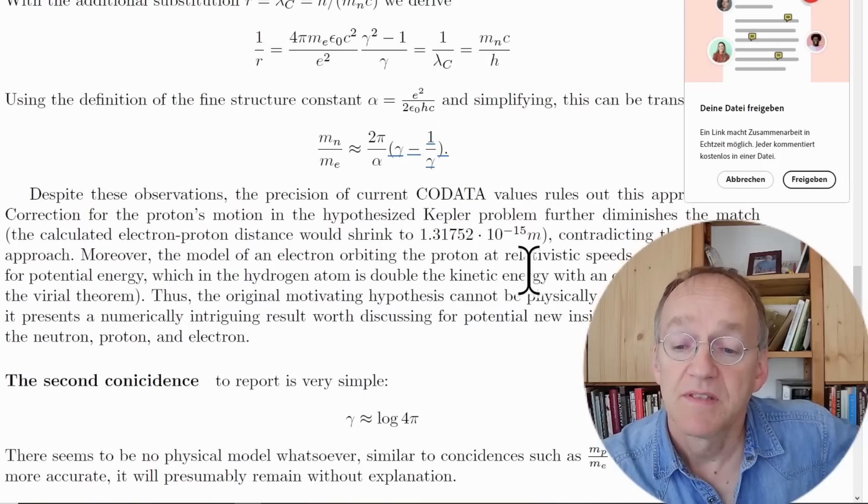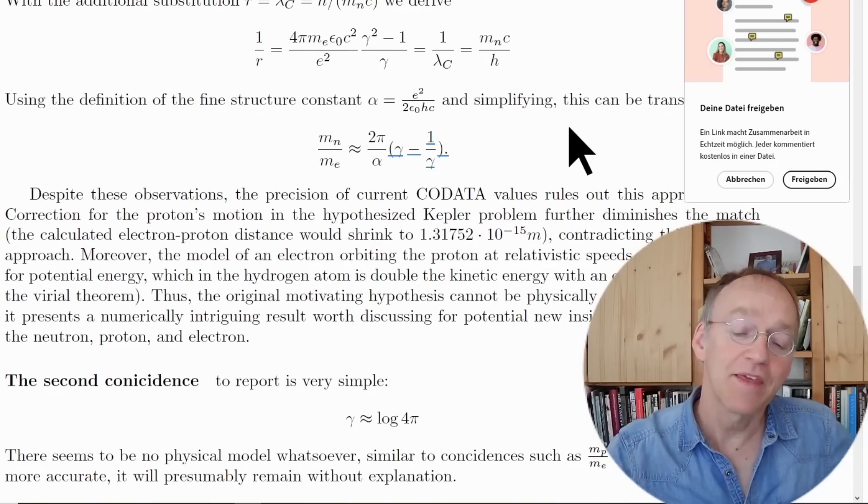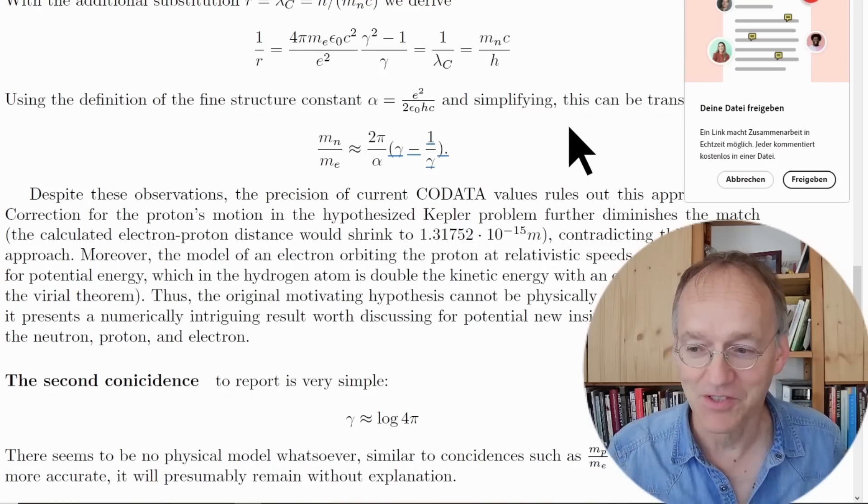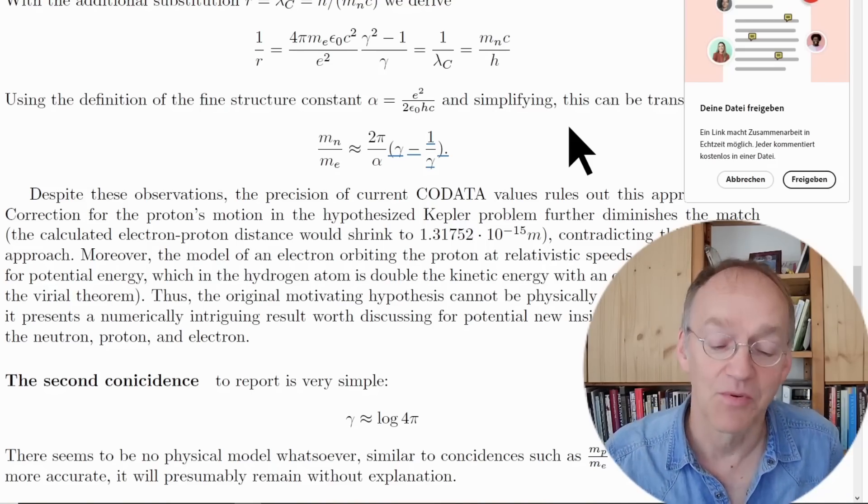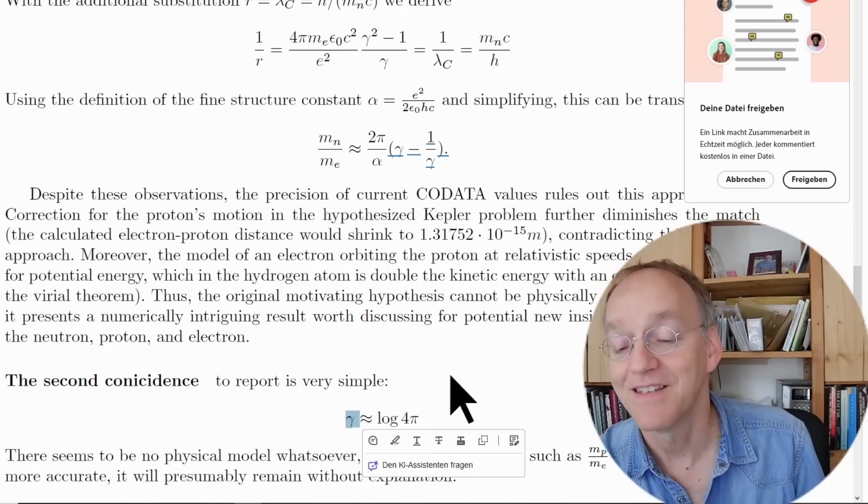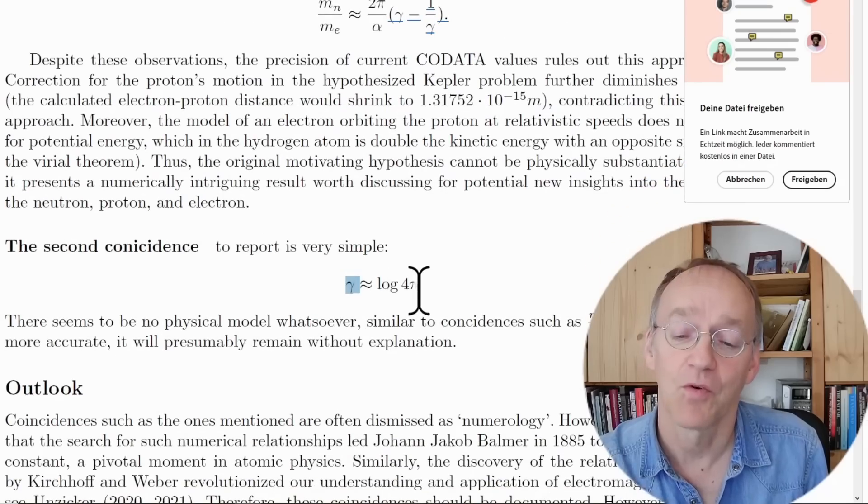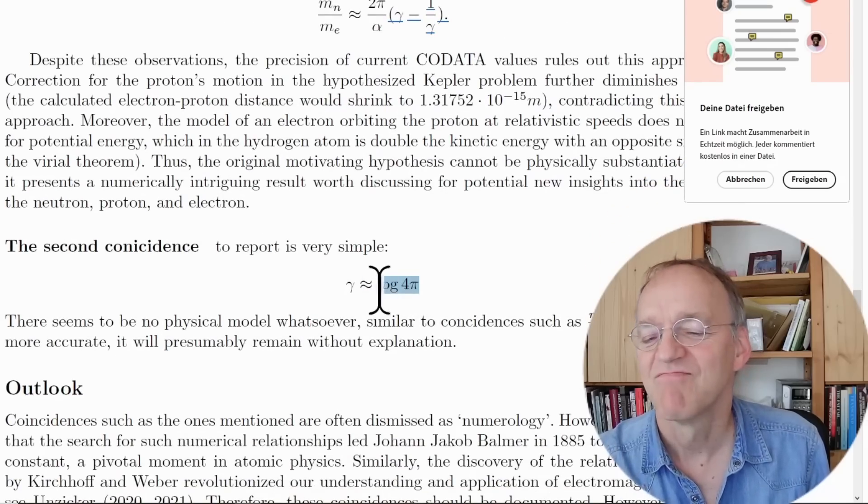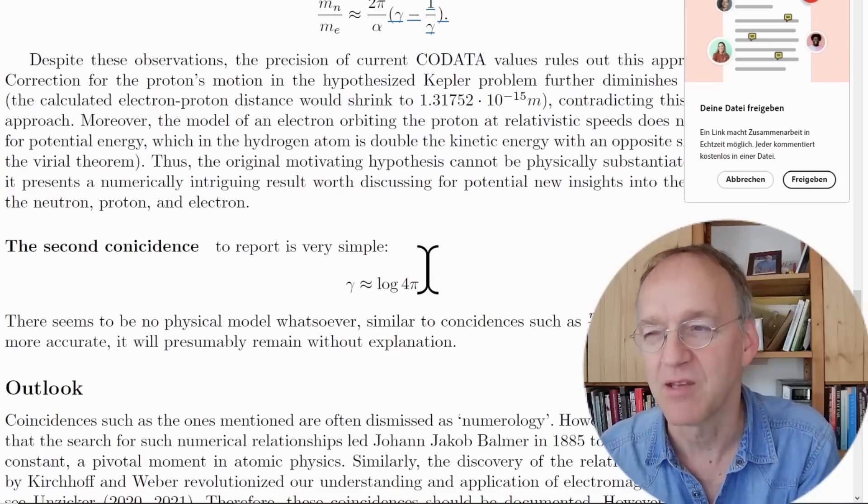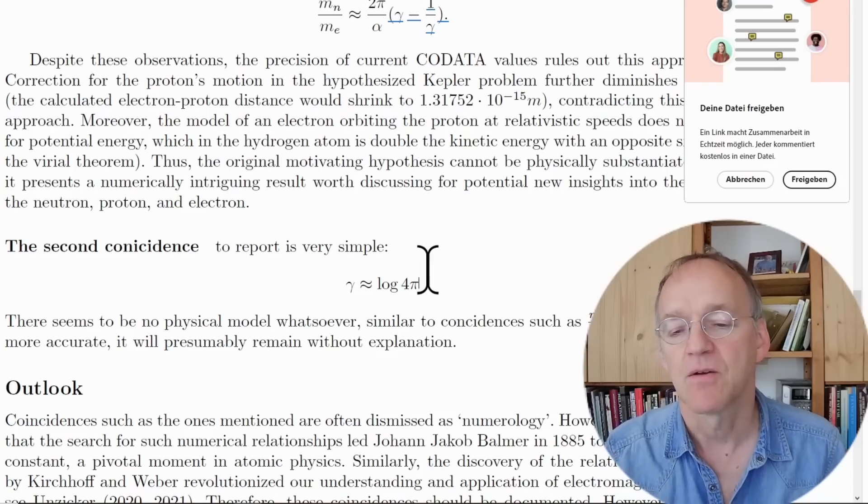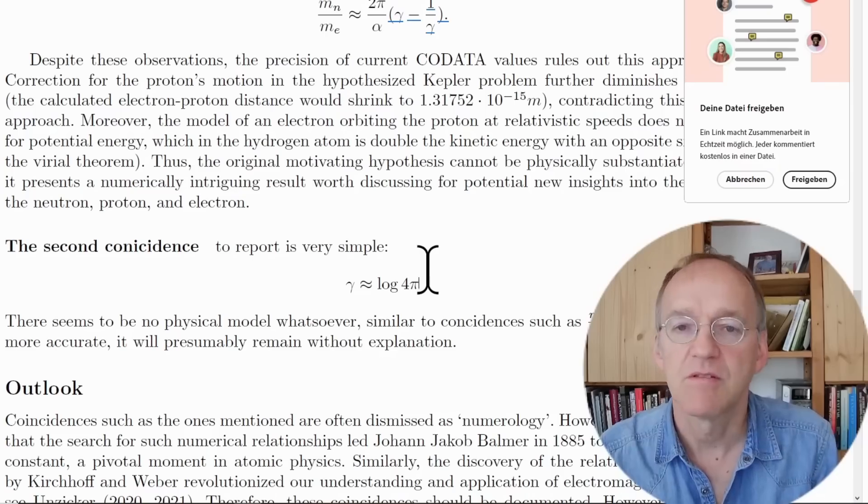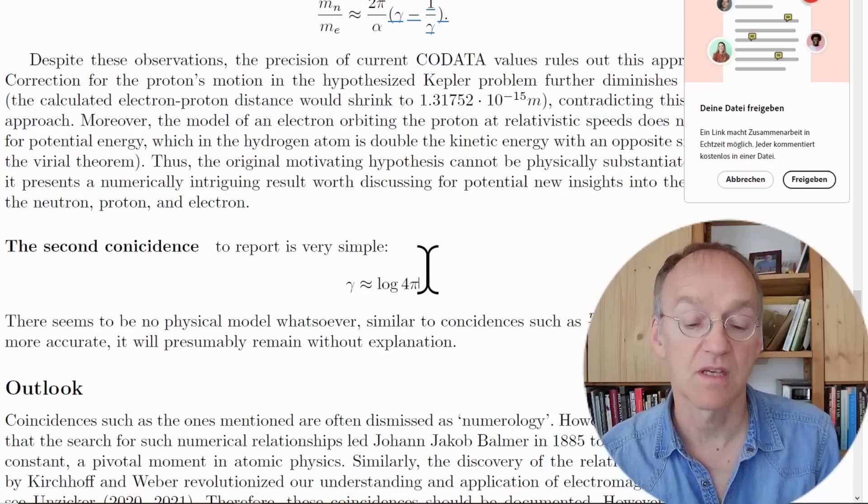While thinking about these numbers, I noticed another little coincidence which is even more strange. This gamma 2.53 is indeed very close to the natural logarithm of 4 pi, which is kind of strange because you could transform that into log 4 plus log pi, which doesn't make sense from a physical perspective. Sometimes we should just collect these coincidences and see what comes out.